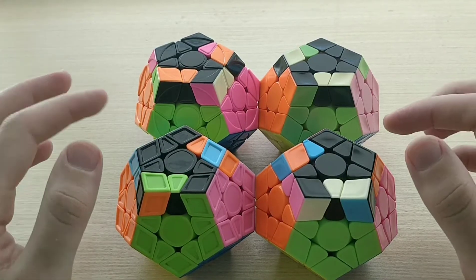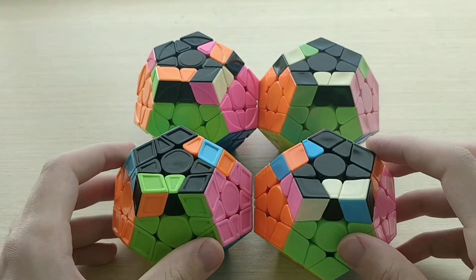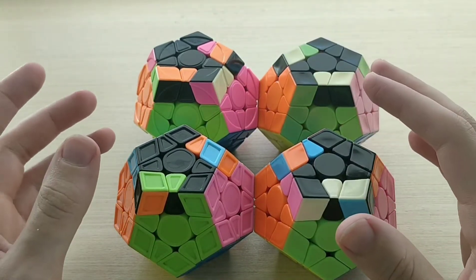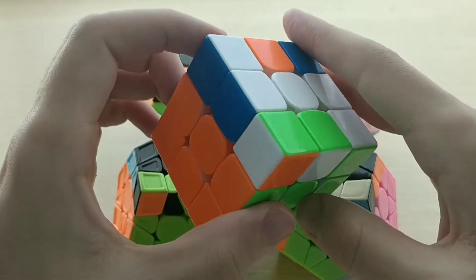So first up we have set 9. I call the set the S shapes on account of this pattern here, although I guess some people might call it the big lightning bolt shapes, because it's the equivalent of this case and its mirror on 3x3.